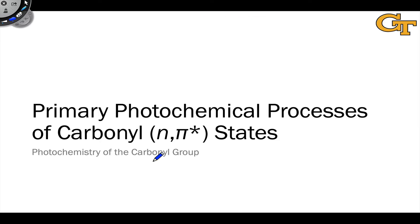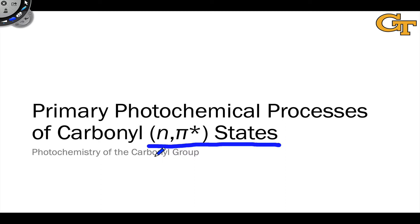I want to begin by taking a very brief look at the general primary photochemical processes that we can expect for carbonyl n-pi* states. The n-pi* state, because of its diradicaloid nature, is particularly interesting in that it has a number of primary processes that are radical-like in nature. This is going to be a recap of things we've seen previously, but applied specifically to the context of a carbonyl.